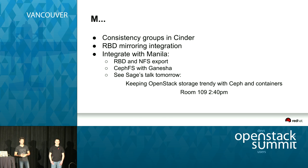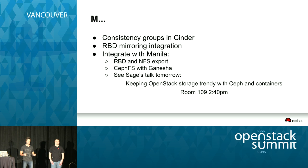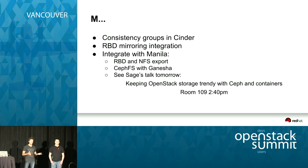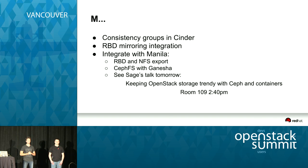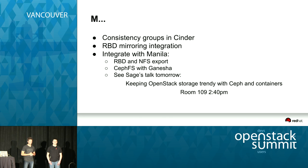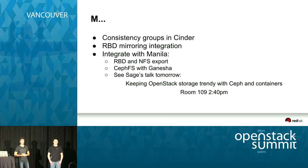We also want to integrate with Manila, the distributed file system as a service. By default, the easiest thing we can do is simply map an RBD block device and re-export it with NFS, or when CephFS is considered ready, use Ganesha in front to provide a CephFS and NFS re-export. But you'll also want to see Sage's talk tomorrow — he'll be discussing this subject.